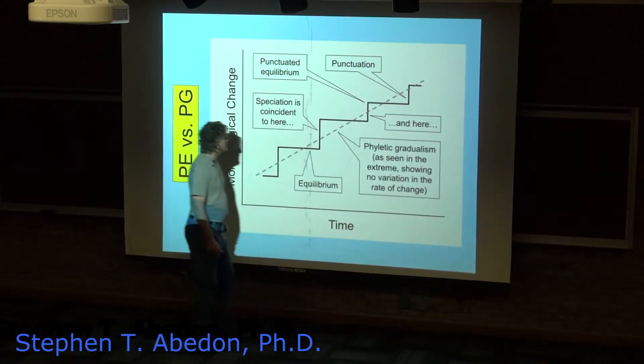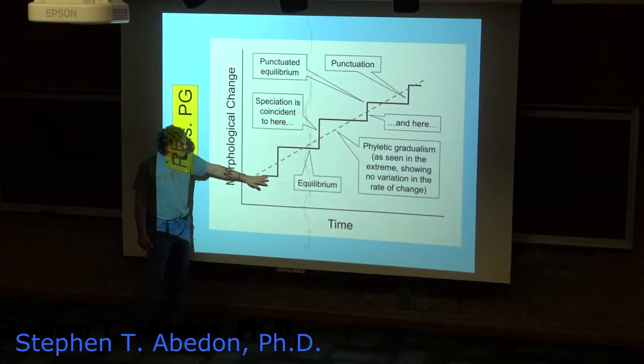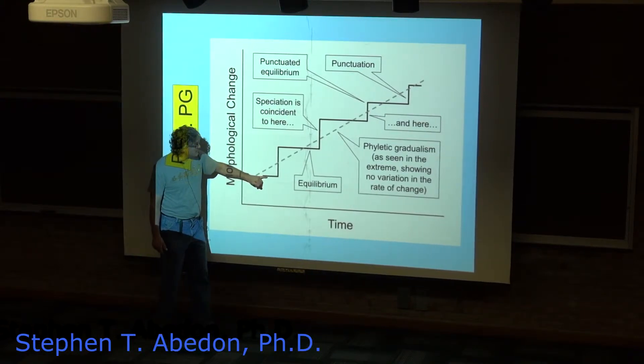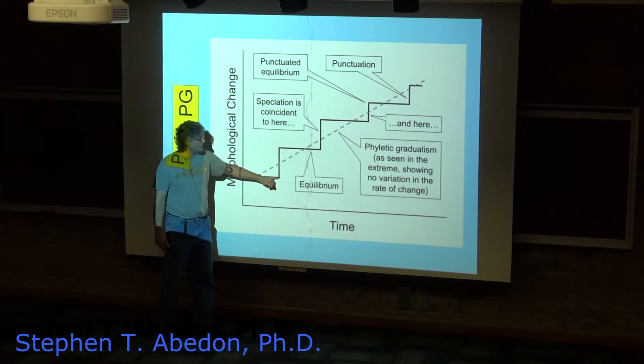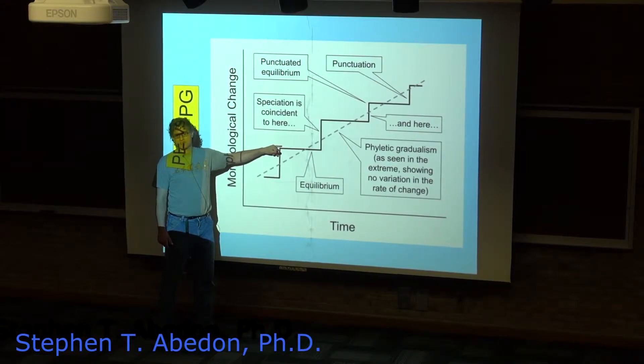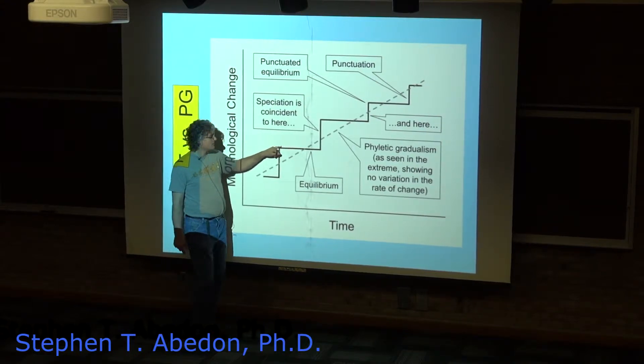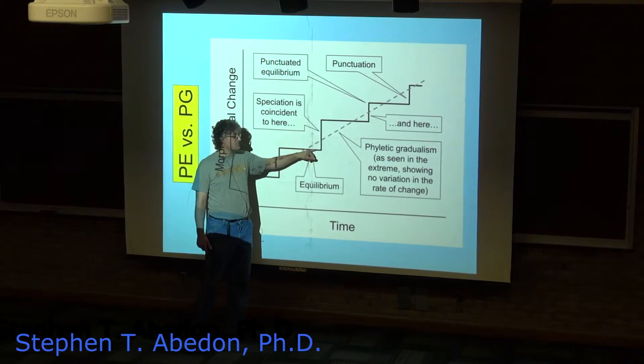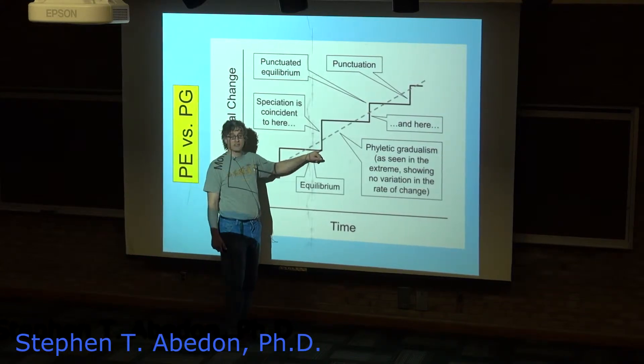That differs from the idea of punctuated equilibrium, where we have equilibrium where little change is occurring, and then we've got this punctuation event where you have rapid change. Again, rapid meaning tens of thousands or hundreds of thousands of years, but rapid as far as the fossil record is concerned, followed by periods of stasis where the population is larger and not changing much.